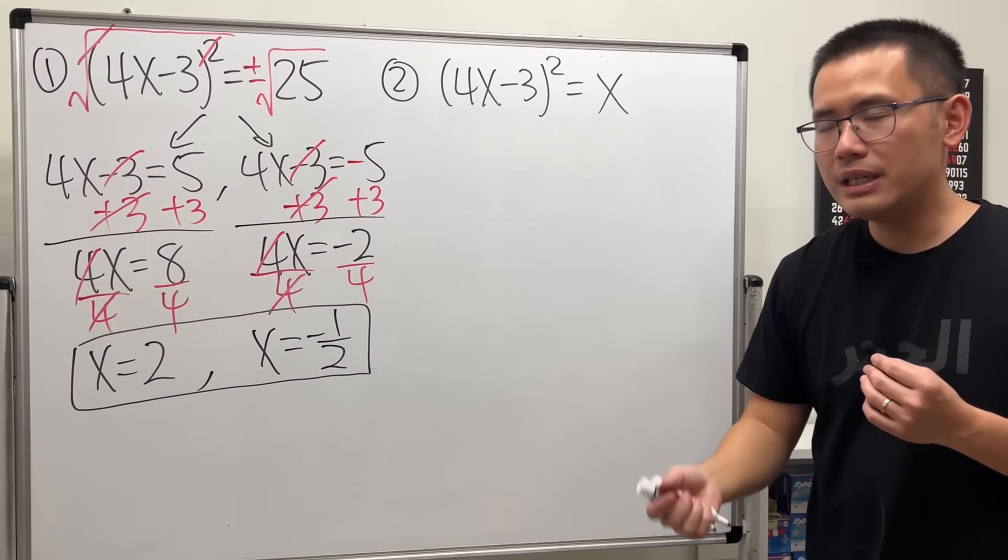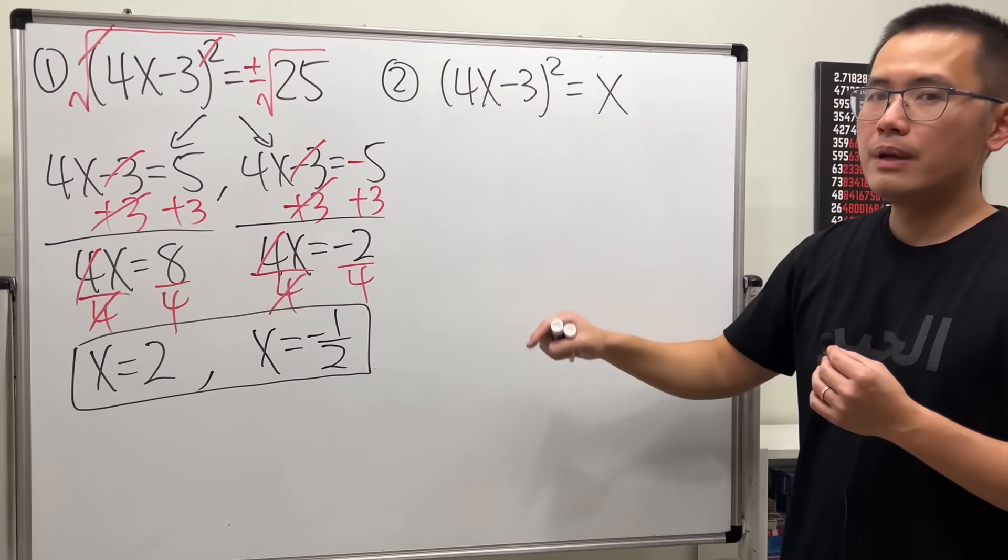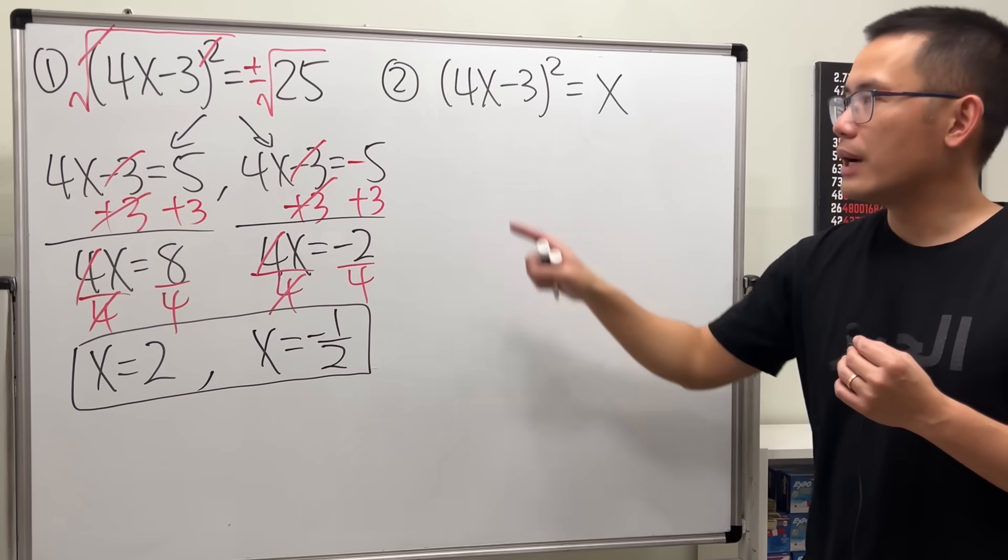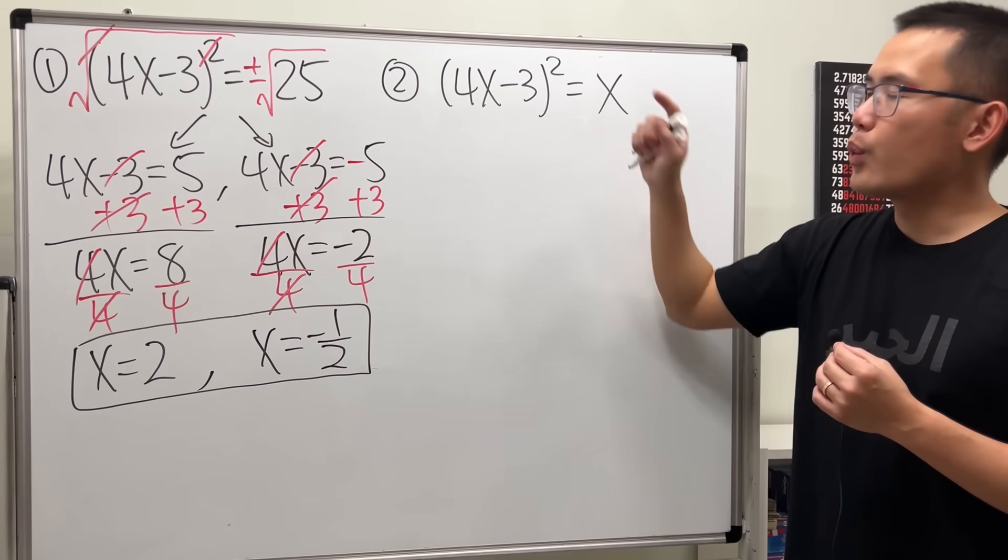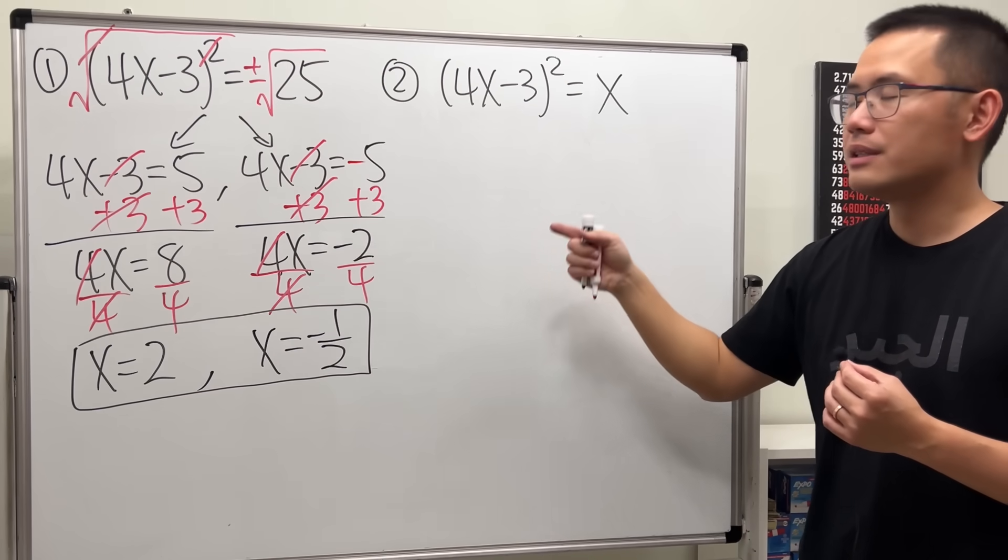So how we have to do it is, we are going to multiply this out. And this is a special product, right? a minus b squared. Work that out first.